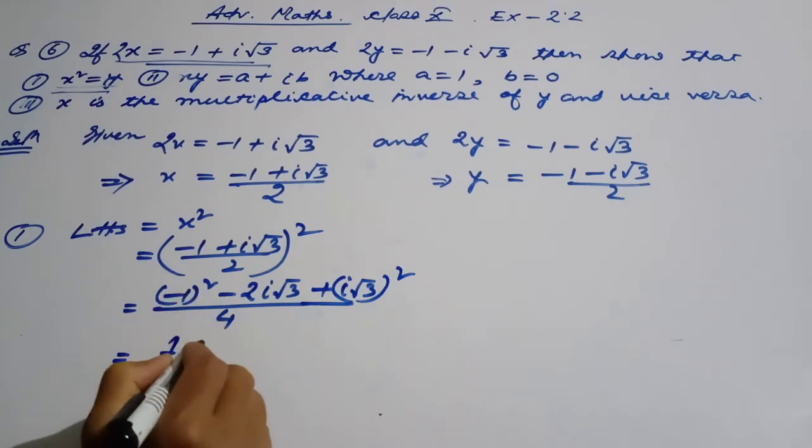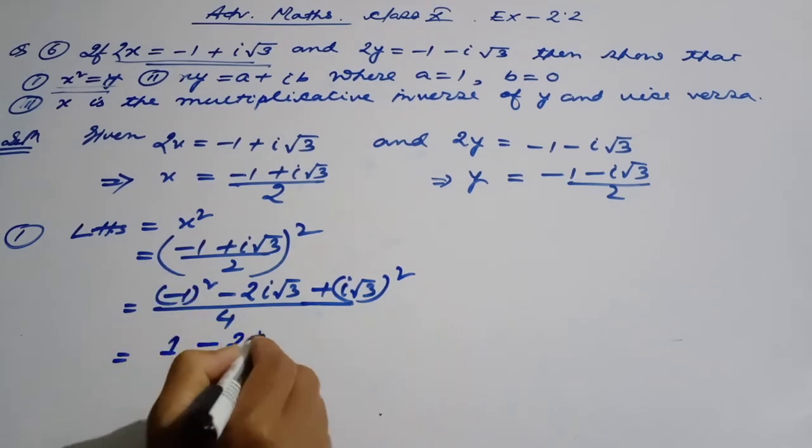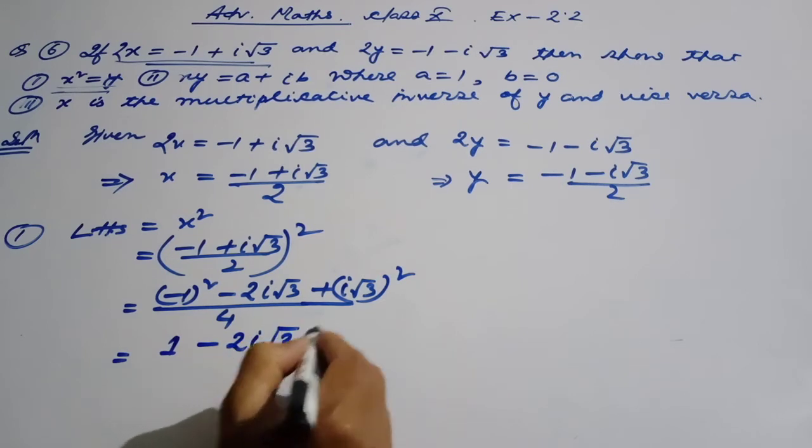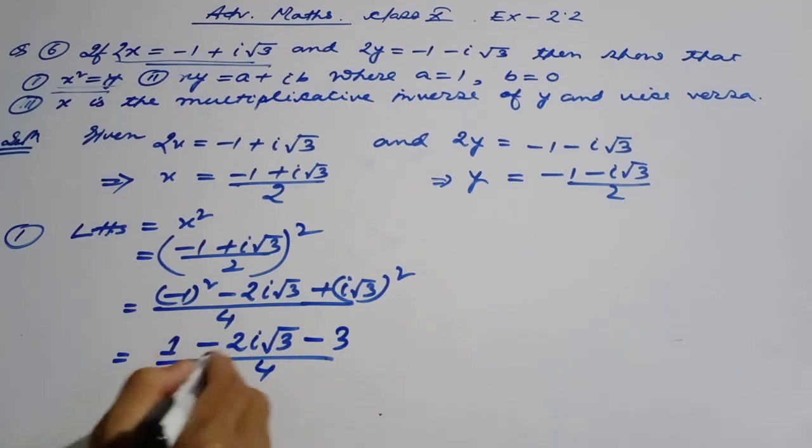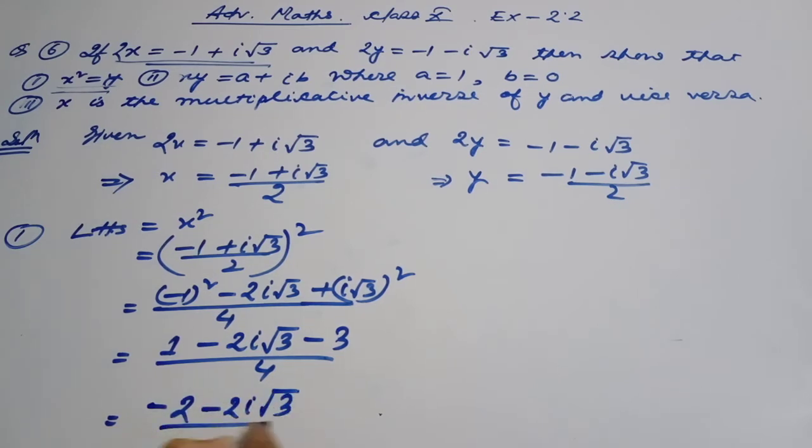This is equal to minus 1 minus 2i root 3. 2i root 3 is common. Minus 1 minus root 3. This is equal to 3. This divided 4. This is equal to 1 minus 1 minus 3, minus 2 plus i root 3 divided 4.